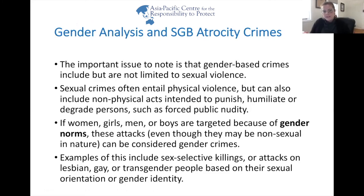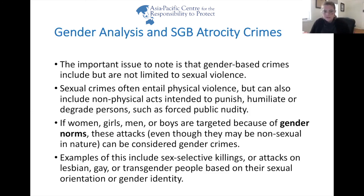When bringing gender analysis to the prevention of sexual and gender-based atrocity crimes, it is important to note that gender-based crimes include but are not limited to sexual violence — there can also be the crime of gender persecution. Sexual crimes often entail physical violence, but can also include non-physical acts intended to punish, humiliate, or degrade persons, such as forced public nudity. If women, girls, men, or boys are targeted because of gender norms, those attacks — even if non-sexual in nature — can be considered gender crimes. Examples include sex-selective killings or attacks on lesbian, gay, or transgender people based on sexual orientation or gender identity, which can form part of the body of evidence for gender-based atrocity crimes.